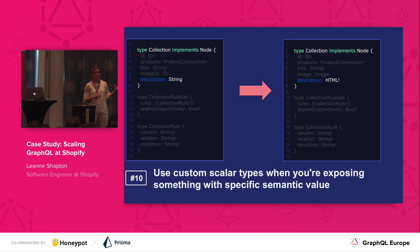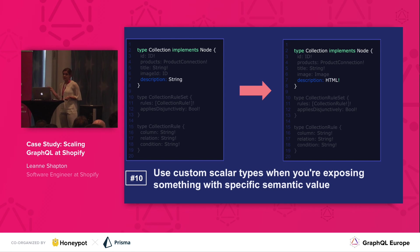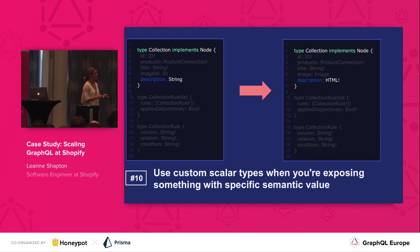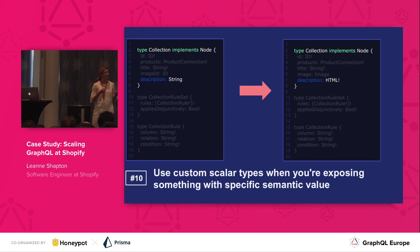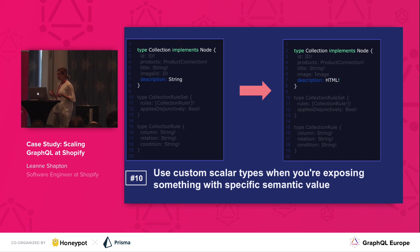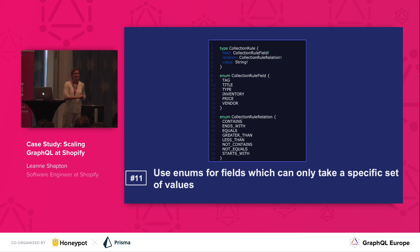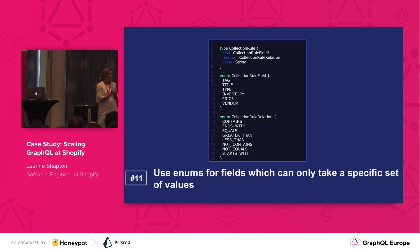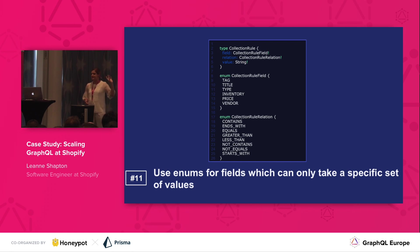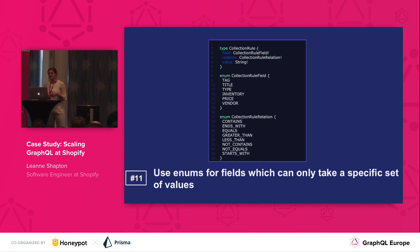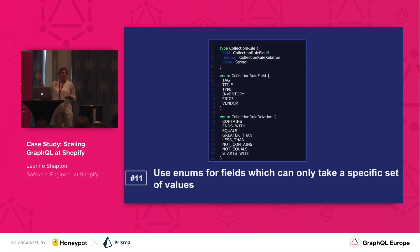We can also change the type — right now description is returning a string. GraphQL allows you to define your own scalar types, and this is probably a prime use case to do so. Description is actually valid HTML, so we'll define our own HTML scalar value. GraphQL comes with scalar values out of the box like integer, string, or boolean, but we can define our own. Use custom scalar types when you're exposing something with specific semantic value. Also, GraphQL has enums, so use them — use enums for fields which can only take a specific set of values. Collection rules can only be one of a certain set of values, so this is a prime case to use enums.